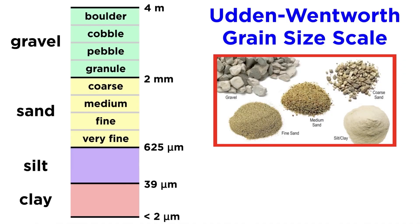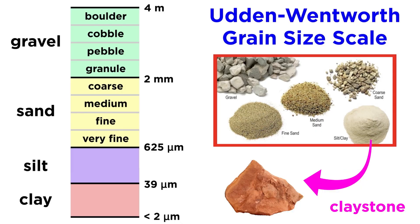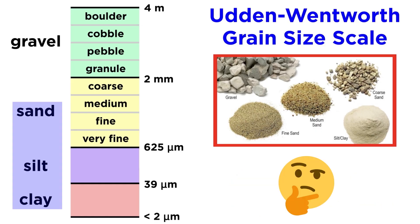Recall from earlier that the grain size of sediments is broken down into gravel, sand, silt, and clay. So a sandstone is a stone composed of mainly sand-sized particles, while a claystone is a stone composed mainly of clay-sized particles. What about a rock that consists of a mix of sand, silt, and clay?